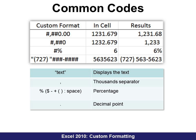Now let's look at some other common codes. Anything in quotation marks will show. So for example, if I want an area code to show, it will show up regardless — I can just put in the last seven digits and the first three digits of the area code will automatically show. The comma means thousand separator, so it will automatically separate our thousands. If I put in a percentage or other symbols, they will show. And then the decimal point.